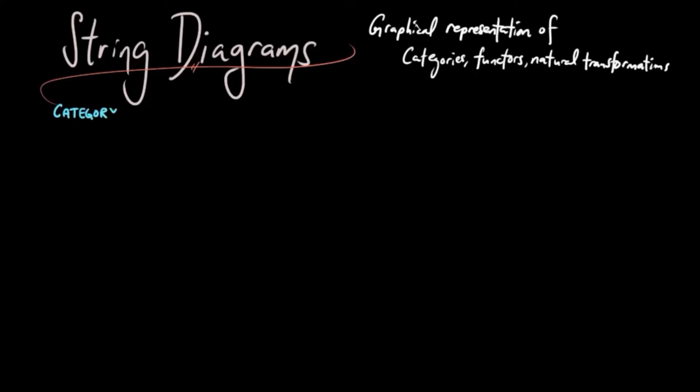The visual representation of a category A is given by a two-dimensional space. To distinguish categories, we may use a color-coded scheme. However, in most cases, the context will make it clear which category we have in the two-dimensional space, and we will omit the color.